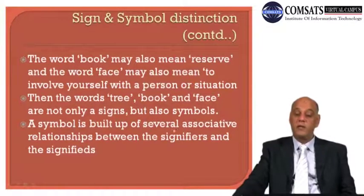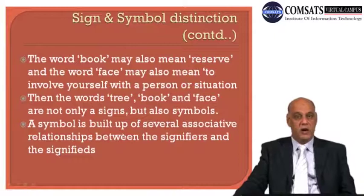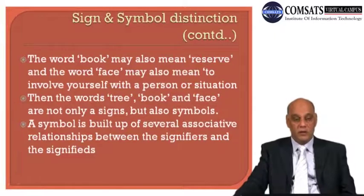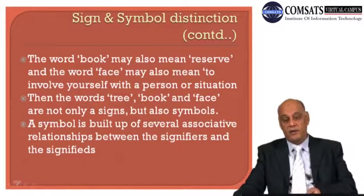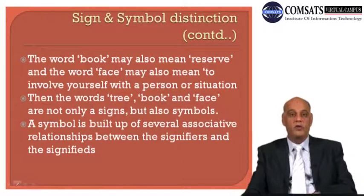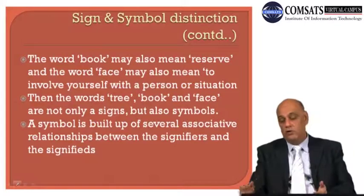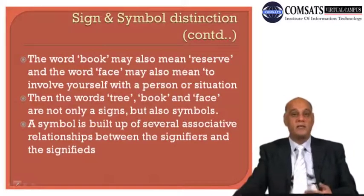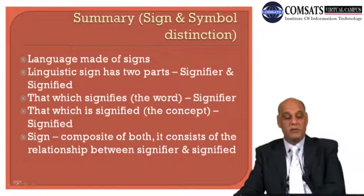A symbol is built up of several associative relationships between the signifiers and the signified. There are several relationships between signifier and signified, and when you combine those relationships, you can call those words symbols — not only signs but also symbols.